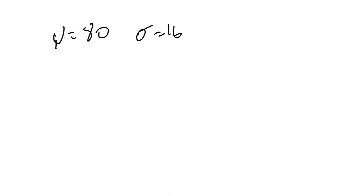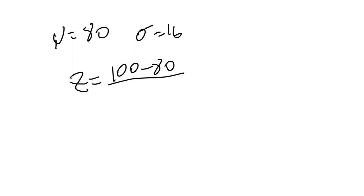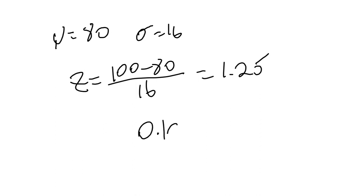To find the probability that the equipment lasts at least 100 hours — so probability of x greater than or equal to 100 — we can standardize x using the z-score. We know that z equals x minus mu over sigma, so that's 100 minus 80 divided by 16, giving us a z-score of 1.25. Using the standard normal table, we get that the probability of z being greater than or equal to 1.25 is approximately 0.1056.